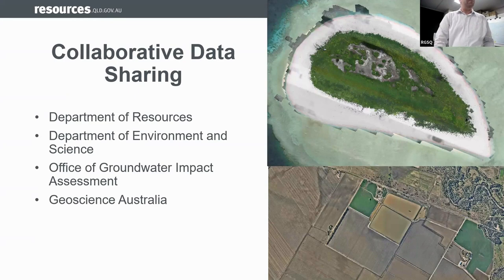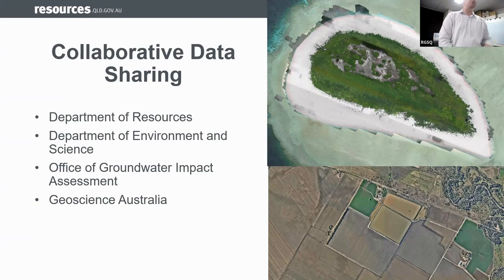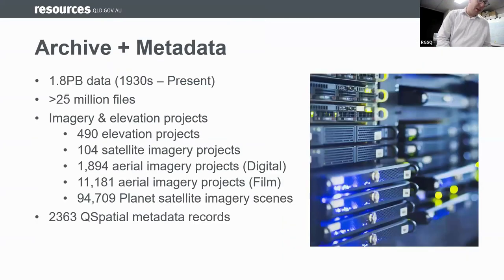OGIA sits within the state government in the Department of Rural Development, Manufacturing and Water — a somewhat separate authority specifically tasked with monitoring groundwater in the Surat management area where CSG activities are occurring. Geoscience Australia also does a bunch of extra work with CSIRO, and we like to pull that information in as well.